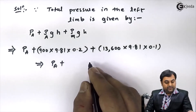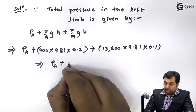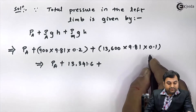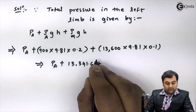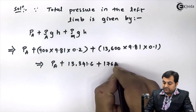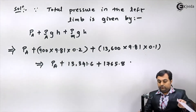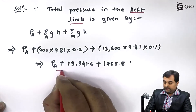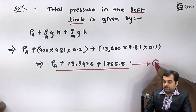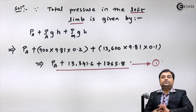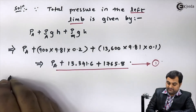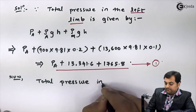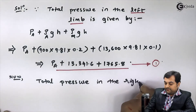Calculating these values: 900 × 9.81 × 0.2 = 1,765.8 N/m², and 13,600 × 9.81 × 0.1 = 13,341.6 N/m². So the total pressure in the left limb is: P_A + 13,341.6 + 1,765.8. This is equation number 1. Now I will calculate the total pressure in the right limb.